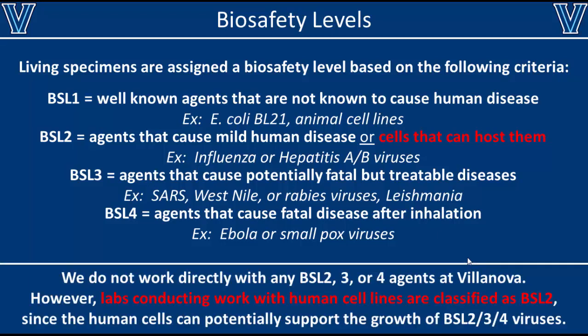Here at Villanova, we do not work directly with any BSL-2, 3, or 4 agents. However, some of our labs do contain human cancer cell lines that are technically classified as BSL-2 since they can harbor BSL-3, 4, or other pathogens. Therefore, if you're working in a lab with human cancer cell lines, you must treat everything as if it was at least BSL-2. However, if you're only working with E. coli or animal cell lines, your lab can be classified as BSL-1.